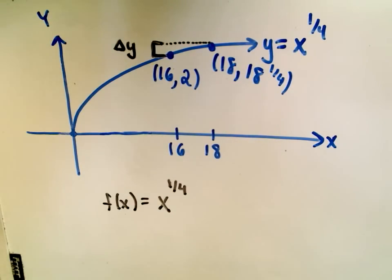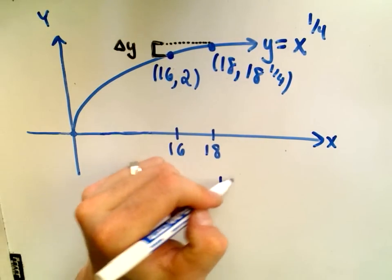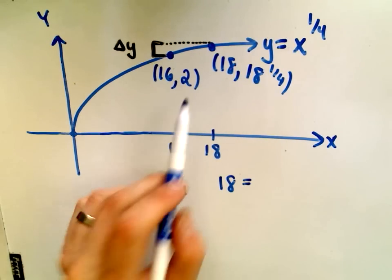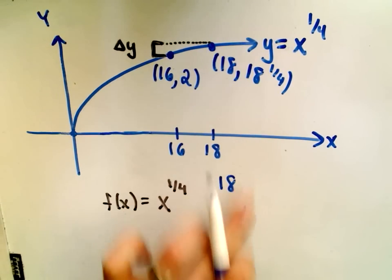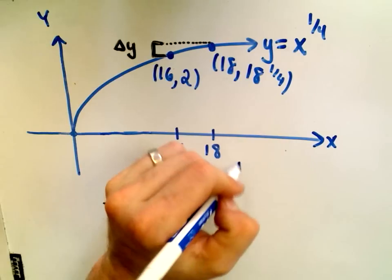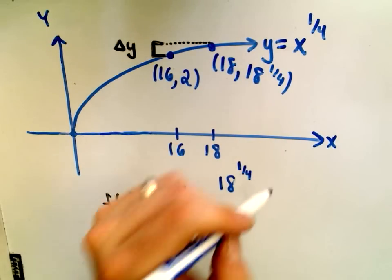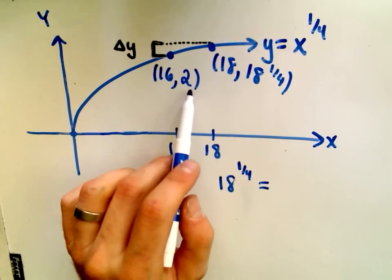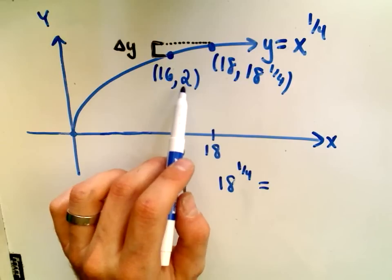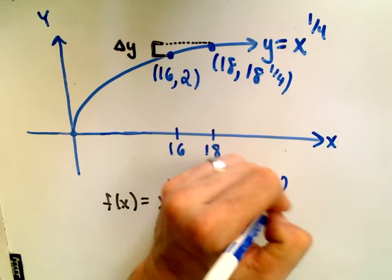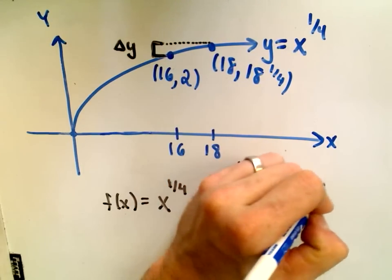What I can do is say that 18^(1/4) is going to equal the original y value, which is 2, plus whatever Δy is.